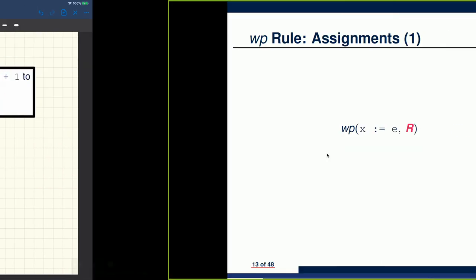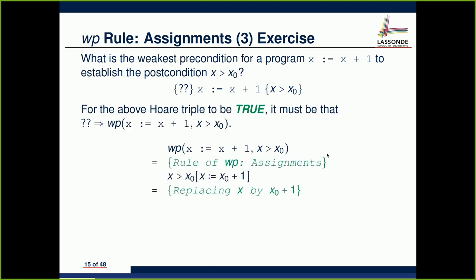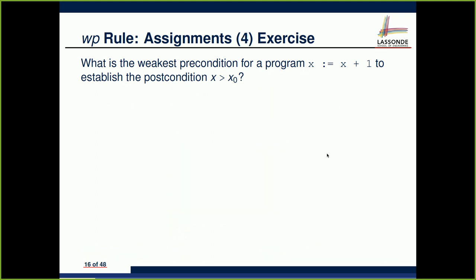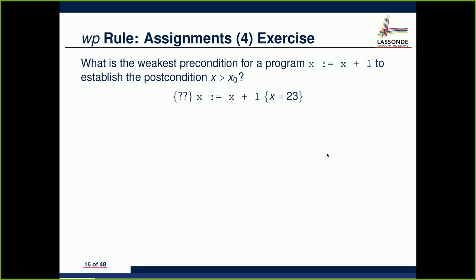There is an example on the slides from Monday which we already did. Here's another example. Note: there is a typo on the slide — the postcondition should be 'x = 23'. Let's look at this Hoare triple: x is assigned to x + 1, and the postcondition we want to satisfy is x = 23. I'll solve this mechanically to warm you up with the process of proving things.